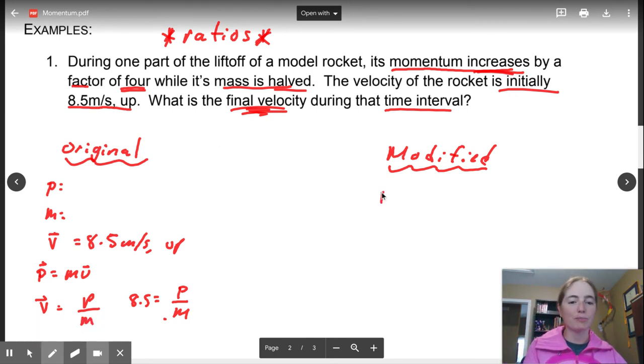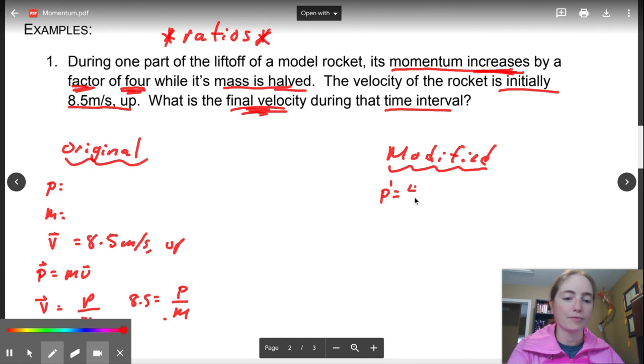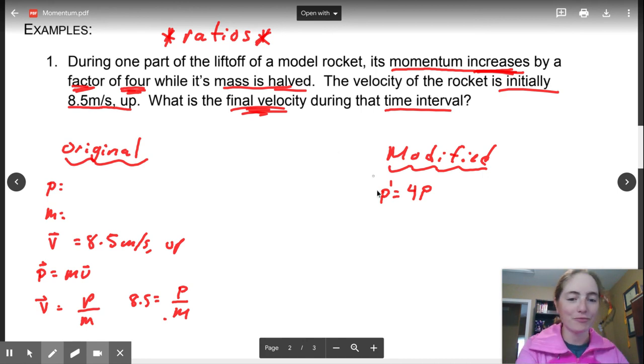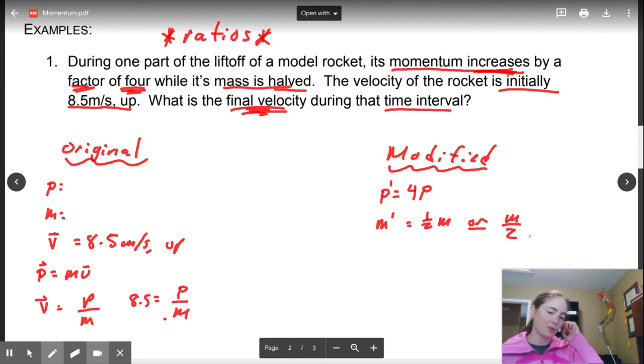However, because P over M is equal to velocity, we can have V is equal to P over M. Our P over M can equal 8.5 meters per second up. Well, as the rocket is launching away, its momentum increases by a factor of four. So P prime is going to equal 4P. Its mass is halved because a part of the rocket falls off. So M prime is equal to either one-half M or M over 2. You can use either one in your equations.